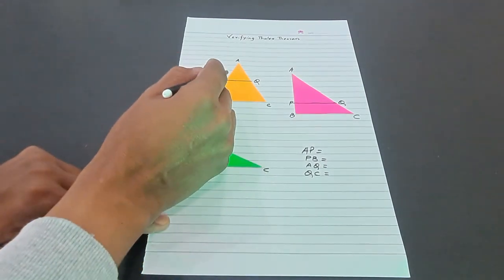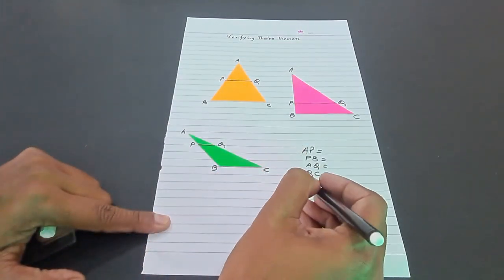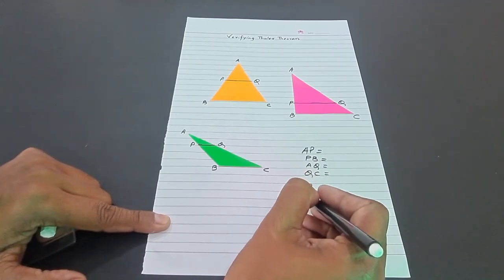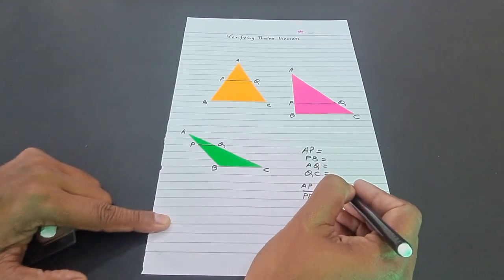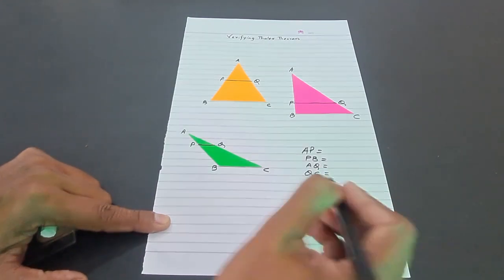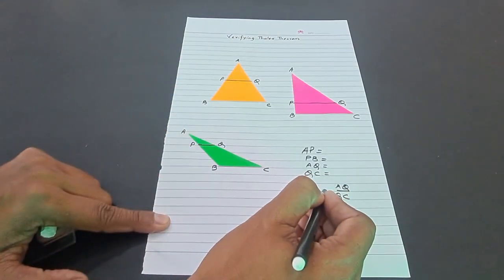In each case you have to find the ratio of AP to PB and the ratio of AQ to QC. In all three figures you will find that these two ratios are approximately equal.